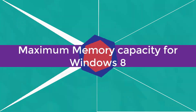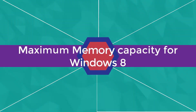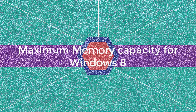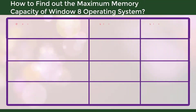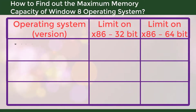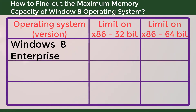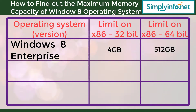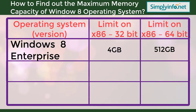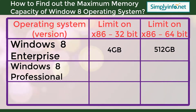Maximum memory capacity for Windows 8: Windows 8 Enterprise for a 32-bit system is 4 GB, whereas for 64-bit it is 512 GB RAM. Windows 8 Professional for 32-bit is 4 GB, and for 64-bit it is 512 GB.